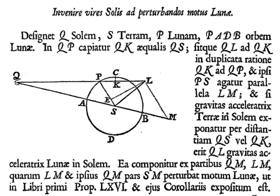Significant advances in lunar theory were made by the Arab astronomer Ibn al-Shatir. Drawing on the observation that the distance to the moon did not change as drastically as required by Ptolemy's lunar model, he produced a new lunar model that replaced Ptolemy's crank mechanism with a double-epicycle model that reduced the computed range of distances of the moon from the Earth. A similar lunar theory, developed some 150 years later by the Renaissance astronomer Nikolaus Copernicus, had the same advantage concerning the lunar distances.